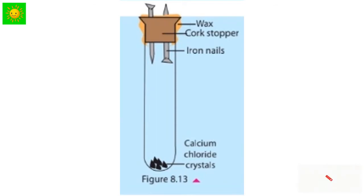Clean two iron nails with sandpaper. Fix them to the cork stopper as shown in the figure. Add calcium chloride crystals to the boiling tube and fix the stopper with the iron nails to it. Make the tube airtight with wax. Observe the setup for several days and record your observation.